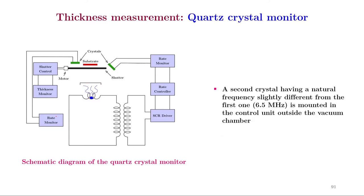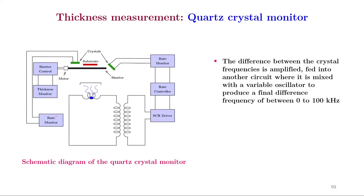A second crystal having a natural frequency slightly different from the first one at around 6.5 megahertz is mounted in the control unit outside the vacuum chamber. The difference between the crystal frequencies is amplified, fed into another circuit where it is mixed with a variable oscillator to produce a final difference frequency of between 0 to 100 kilohertz. In some cases, the difference frequency is directly read by a frequency counter.